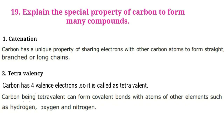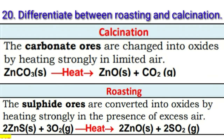Next question: explain the special properties of carbon that allow it to form many compounds. The first property is catenation — carbon has a unique property of sharing electrons with other carbon atoms to form straight, branched, or long chains. The second property is tetravalency — carbon has four valence electrons, so it is tetravalent. Being tetravalent, carbon can form covalent bonds with atoms of other elements such as hydrogen, oxygen, and nitrogen. These properties help carbon to form many compounds.